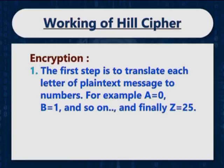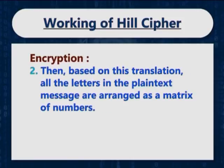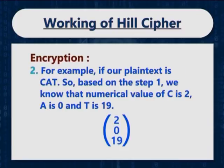In hill cipher, the first step is to translate each letter of the plain text message to numbers. For example, A is equal to 0, B is equal to 1, and so on, and finally Z is equal to 25. Then, based on this translation, all the letters in the plain text message are arranged as a matrix of numbers. For example, if our plain text is CAT, the numerical value of C is 2, A is 0 and T is 19. Hence, our plain text matrix contains a single column and three rows with elements 2, 0 and 19.